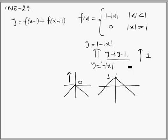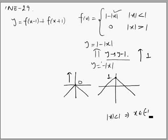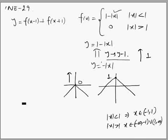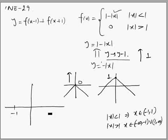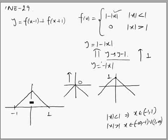Now we need to draw 1 - |x| only when |x| < 1, which means x is between -1 and 1. So we draw this triangular graph only between -1 and 1, and outside that interval it is 0. This gives us the graph of f(x) versus x.